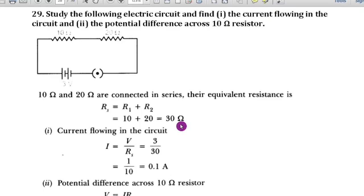Now current flowing in a circuit we have to calculate. To find the current, we know the formula V equals IR. Therefore, I equals V by RS. What is V? They gave 3. Therefore, 3 by 30, 3 ones are 3, 30s are. Therefore, the answer will become 0.1 amps. So the current flowing to the circuit is 0.1 amps.